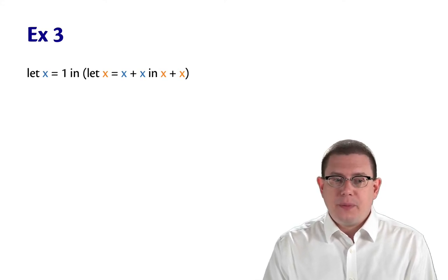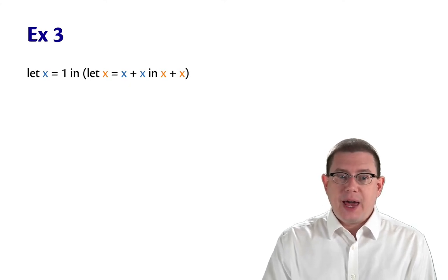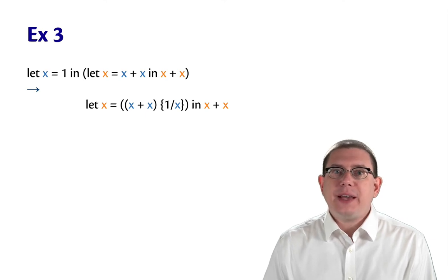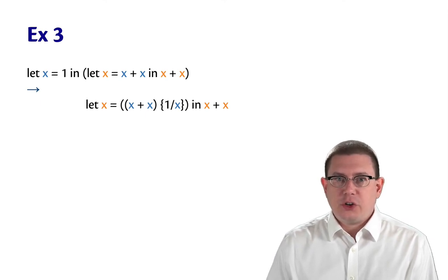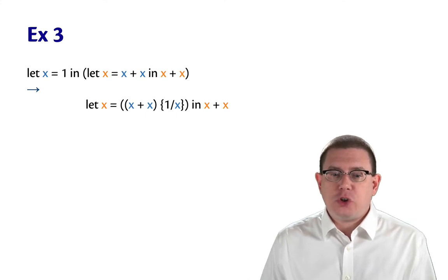We want to take a single step, which means we'll get rid of that outer let expression that binds x to 1 and step to the inner let expression. And we want to make some substitutions in that inner let expression. But we have to be super careful about which substitutions we make.